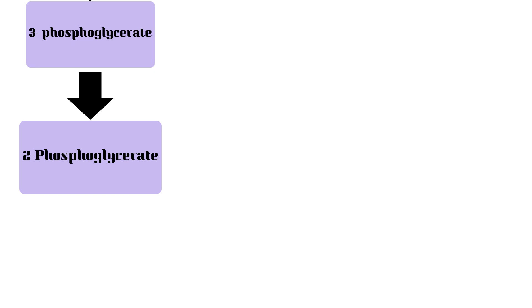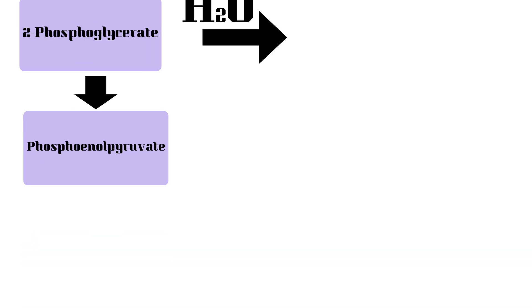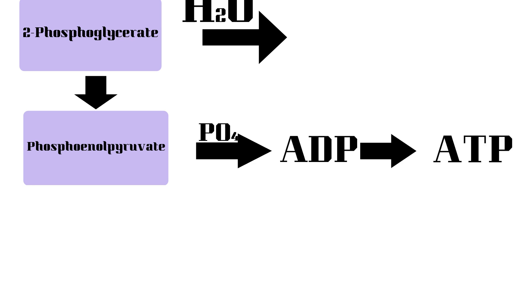The 2-phosphoglycerate molecules then lose a water molecule and become phosphoenolpyruvate. Because phosphoenolpyruvate is unstable, it readily donates its phosphate group to ADP, which produces ATP. Again, this reaction will be happening two times, so two ATPs are produced.